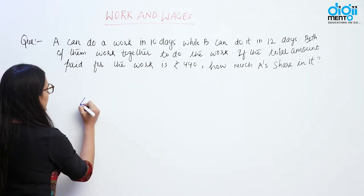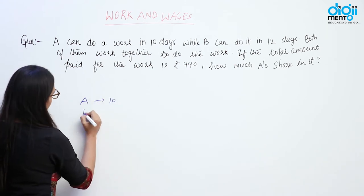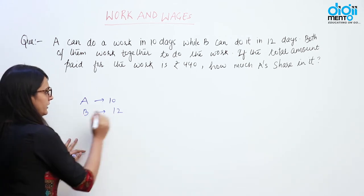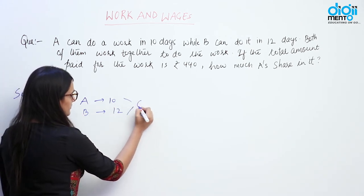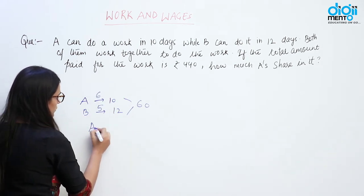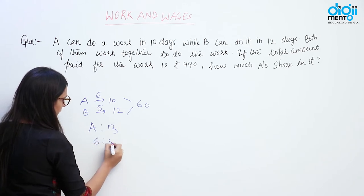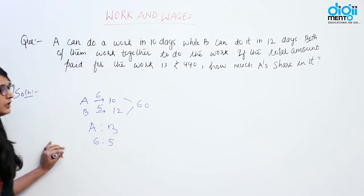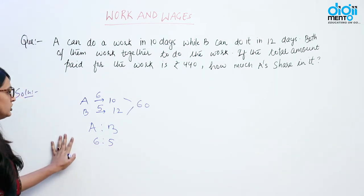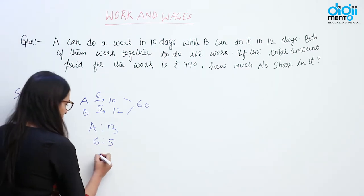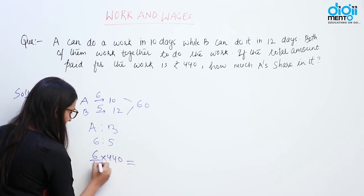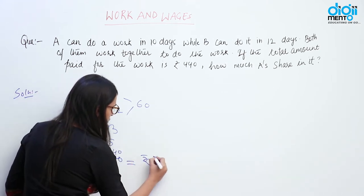A can do a piece of work in 10 days and the same work is done by B in 12 days. First of all, we have to find the efficiency of A and B. Take the LCM of these two numbers, that is 60. Efficiency of A comes out to be 6, and for B it comes out to be 5. So the efficiency ratio of A and B is 6:5. Since wages ratio equals efficiency ratio, A will get 6/11 out of Rs. 440, that is Rs. 240.